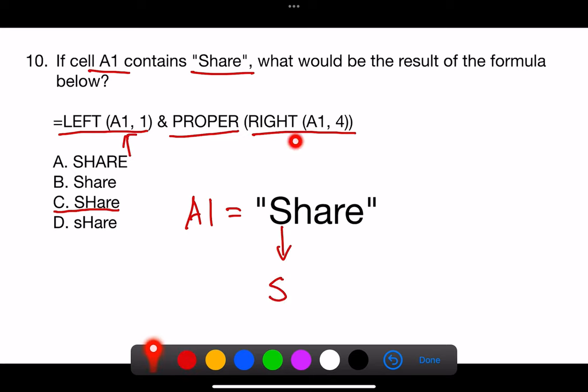Right, A1, 4, extracts the last four characters from the string in cell A1, which is hair.